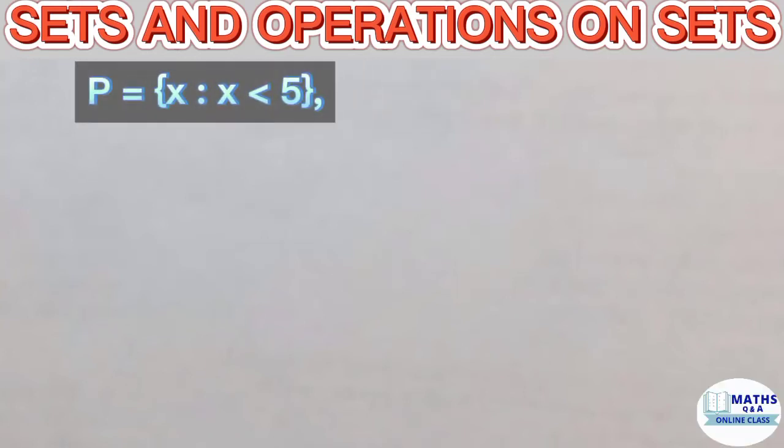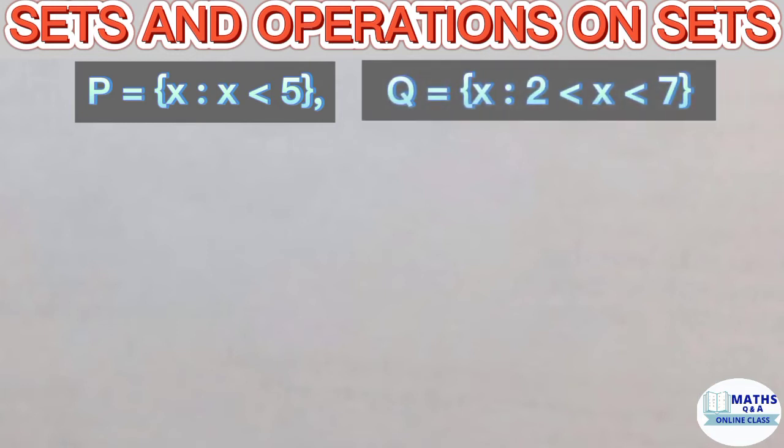The set P, given in set builder notation form as x such that x is less than 5, Q, x such that x is greater than 2 and x is less than 7